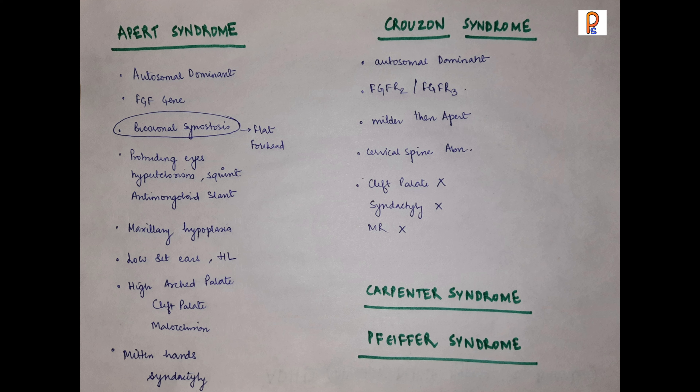Another syndrome associated with craniosynostosis is Crouzon syndrome. Crouzon syndrome is again autosomal dominant and involves fibroblast growth factor receptors. Its presentation is milder compared to Apert. There will be similar features such as protruding eyes and hypertelorism, but we also get a beaked nose, flattened forehead, and cervical spine abnormality. However, in Crouzon syndrome we will not get cleft palate, syndactyly, or mental retardation.